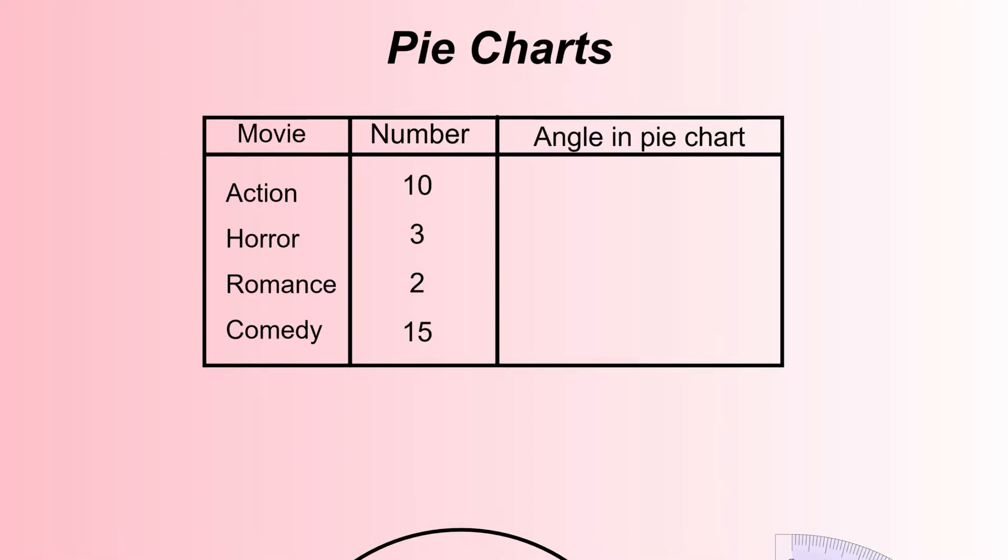Hi there, welcome to www.highschoolmaths.co.uk. Today we're going to be looking at how to draw pie charts. We're going to look at an example here where we've taken different genres of movies—action, horror, romance, and comedy—asked a group of people what their favorite was, and we've got the results here.